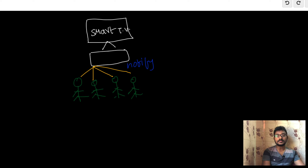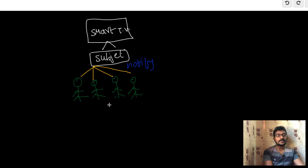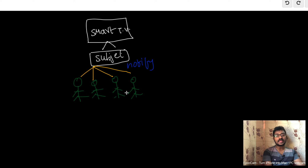The subject will send the notification to the registered people. Here we can relate the Smart TV as the subject and these people as the observers. These people are observing something — they are trying to buy the product — so they register with the subject. Whenever the product is available, the notification will be sent to these observers.